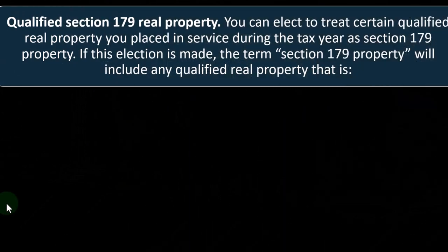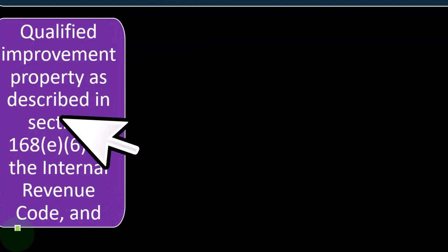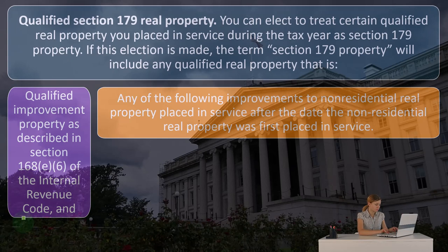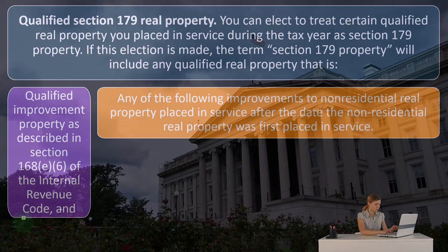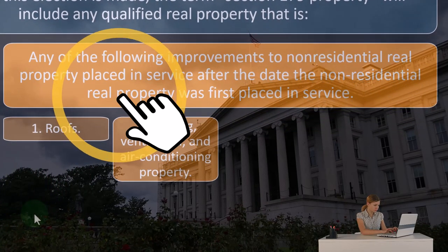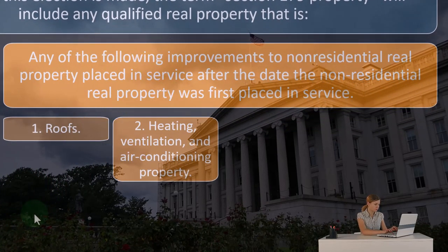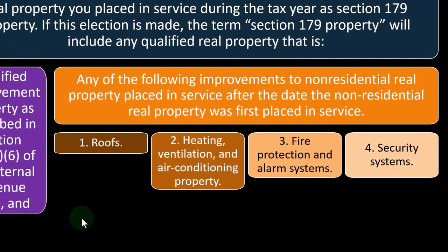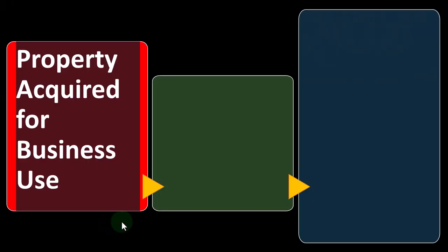We're talking real estate here generally — that is, qualified improvement property as described in Section 168(e)(6) of the Internal Revenue Code, and any of the following improvements to non-residential real property placed in service after the date the non-residential real property was first placed in service: number one, roofs; number two, heating, ventilation, and air conditioning property; number three, fire protection and alarm systems; number four, security systems. Property acquired for business use.